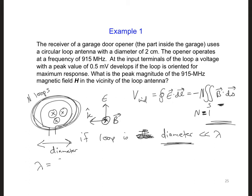We have lambda is C over F, 3 times 10 to the 8th over 915 megahertz. So we get lambda is 33 centimeters. And so the diameter of the loop is 2 centimeters. And that's quite a bit smaller than 33 centimeters.